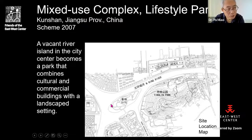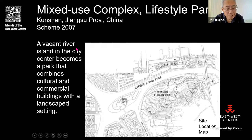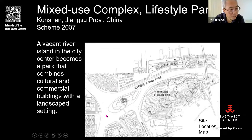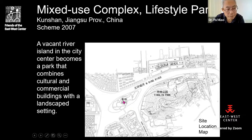The project to illustrate this approach is a mixed-use complex in a lifestyle park in Kunshan, China — a medium-sized city west of Shanghai where many iPhones are produced. The site is a river island in the middle of Kunshan city, where three or four canals merge. The island is a complete landscape but vacant — no buildings, with three small hills.